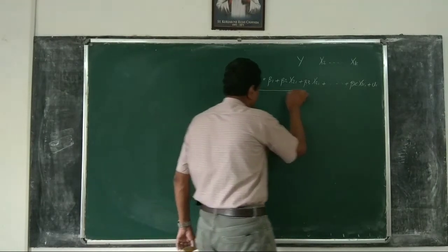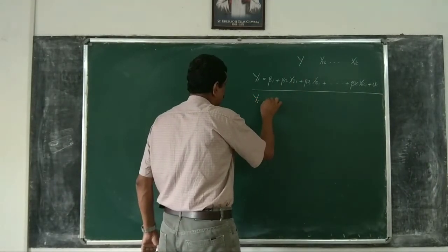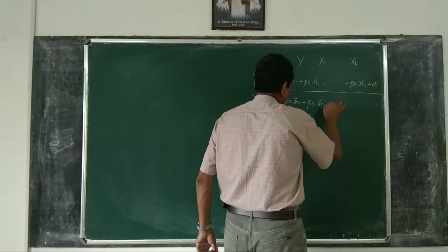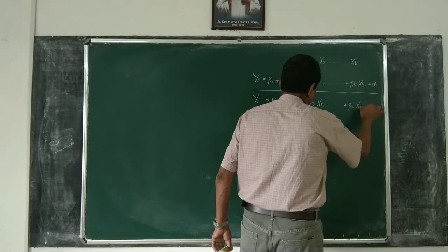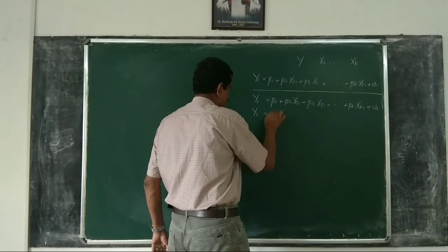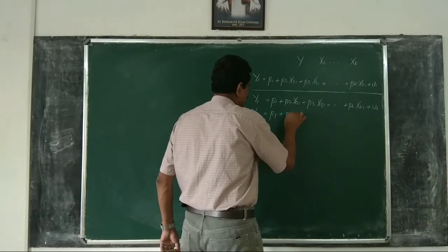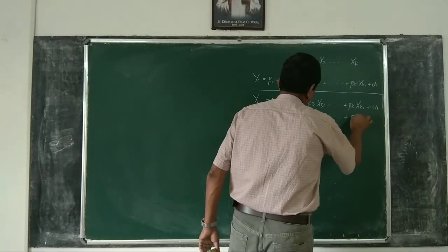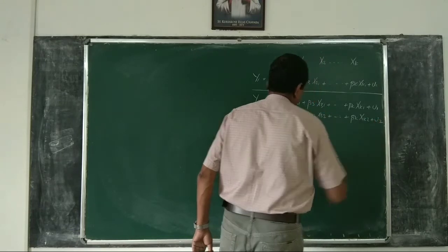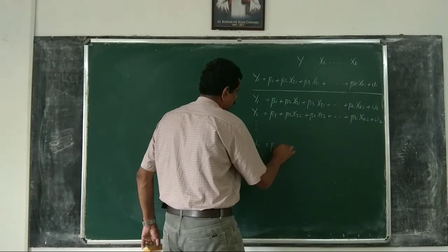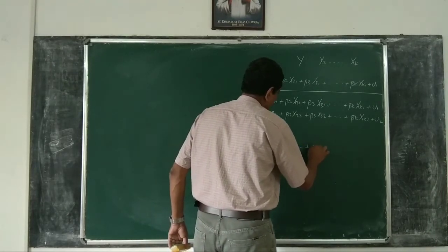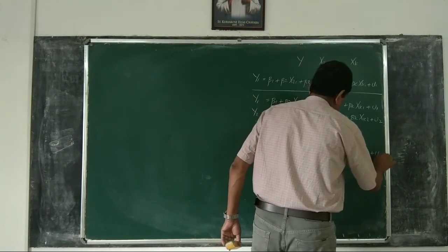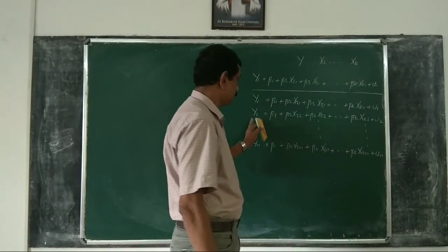Now, if we expand this in terms of all the values, the first equation is: y1 equals beta1 plus beta2 x21 plus beta3 x31 plus etc., beta_k xk1 plus u1. The second is: y2 equals beta1 plus beta2 x22 plus beta3 x32 plus etc., beta_k xk2 plus u2. Similarly, yn equals beta1 plus beta2 x2n plus beta3 x3n plus beta_k xkn plus un, in terms of all observations of y and x.